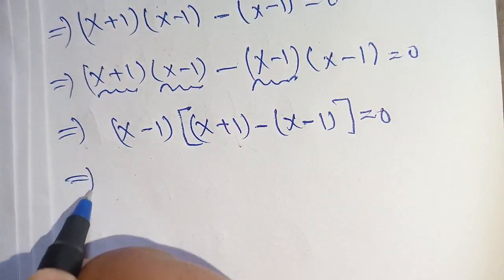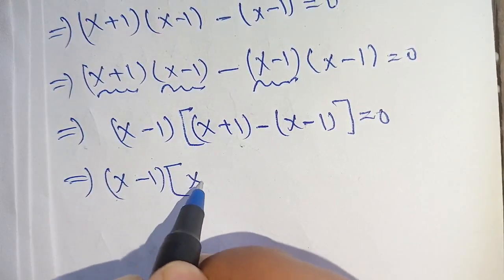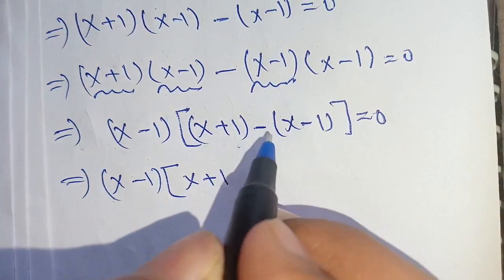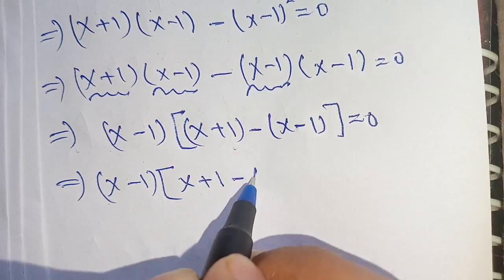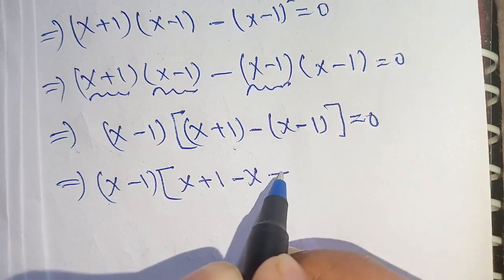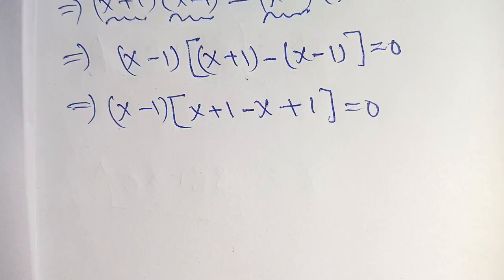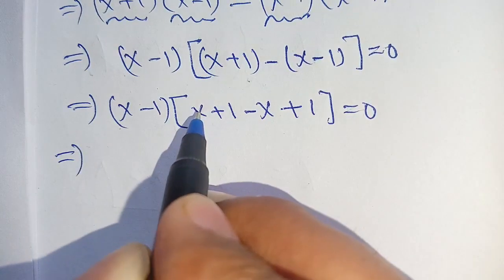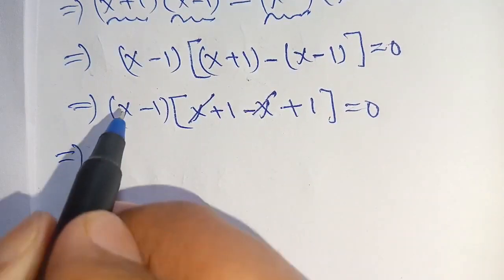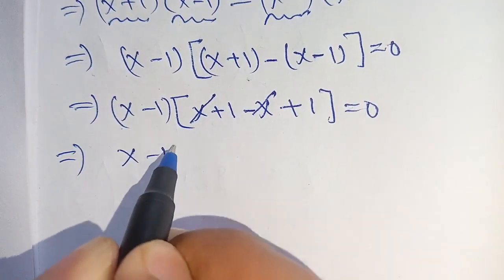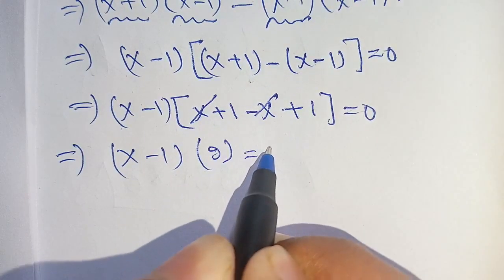In the next step, expanding inside the bracket: x plus 1 minus of x minus 1 gives us, when we multiply minus by minus it becomes plus 1. Now the x terms cancel out, and it becomes x minus 1 times 1 plus 1, which is 2, is equal to 0.